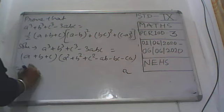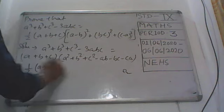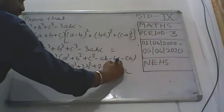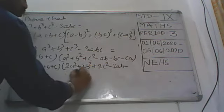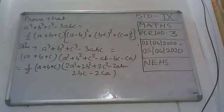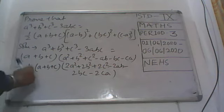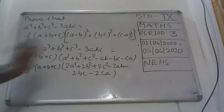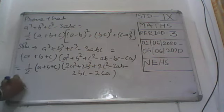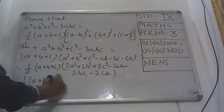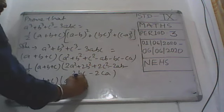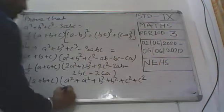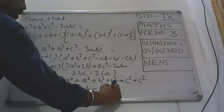So one thing we can do here: write one half into a plus b plus c, and inside this all becomes 2a square plus 2b square plus 2c square minus 2ab minus 2bc minus 2ca. Why? Because we have divided by 2 outside — one 2 will be multiplied inside, and that 2 cancels out. So our equation is the same. Now 2a square can be written as a square plus a square, similarly b square plus b square, c square plus c square, minus 2ab minus 2bc minus 2ca.